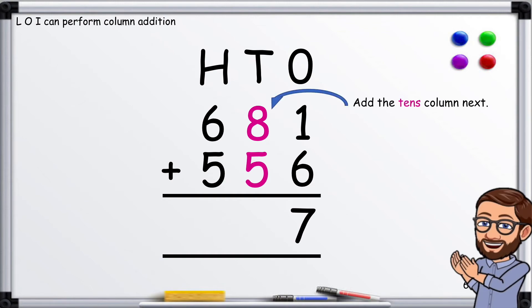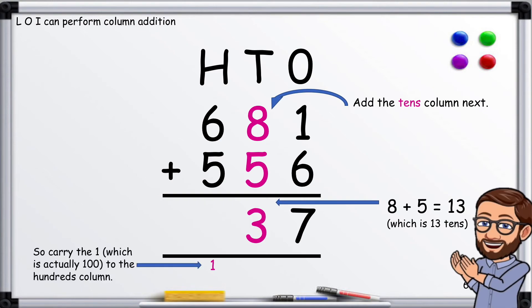Then we add the tens column: 8 plus 5 equals 13, so we carry that 1 to the hundreds column. The 3 goes in the space where the tens answer is, and we carry the 1 to the hundreds column.